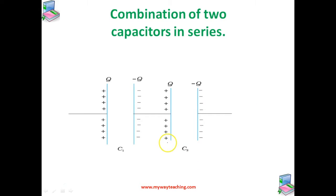The right plate of C2 has a charge minus Q and the left plate of C2 has a charge plus Q. If this were not so, the net charge on each capacitor would not be zero. This would result in an electric field in the conductor connecting C1 and C2, and charge would flow until the net charge on both C1 and C2 is zero. So in series combination, the charges on the two plates are the same on each capacitor.